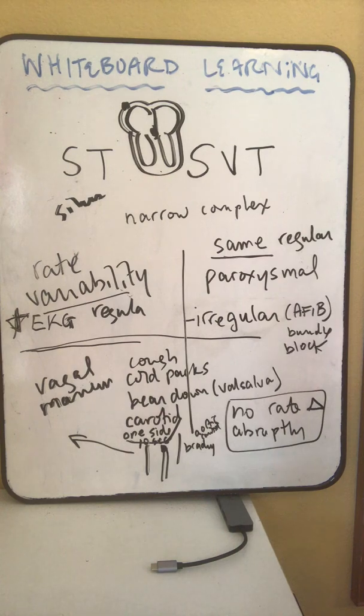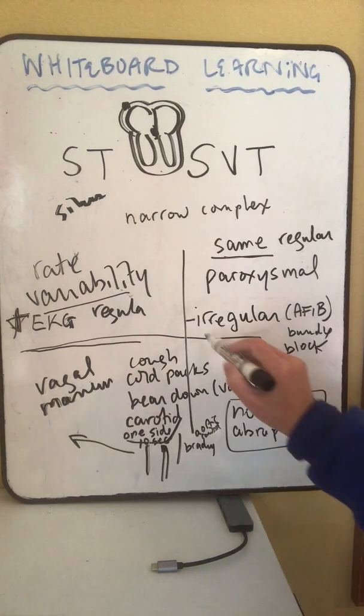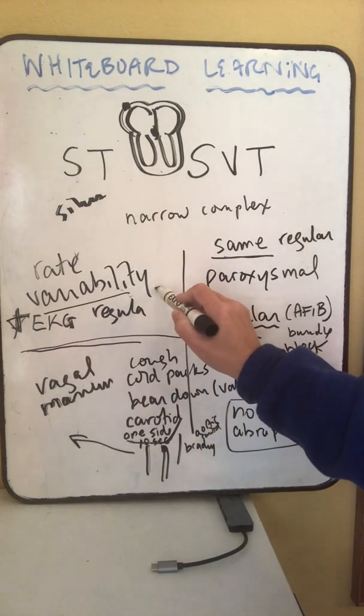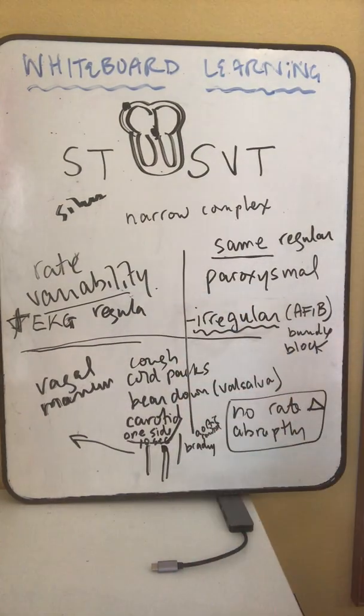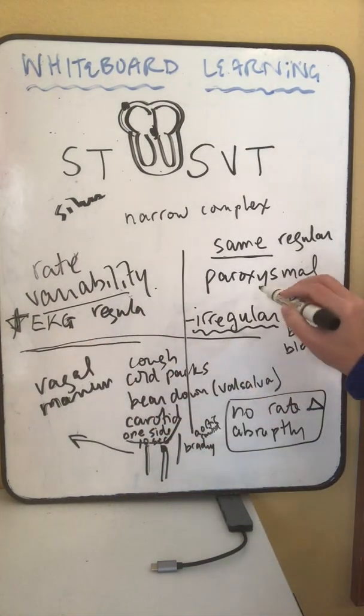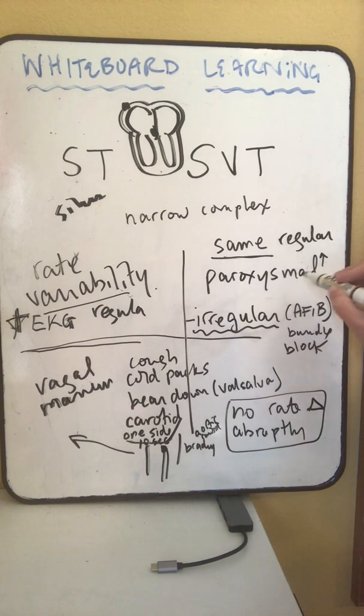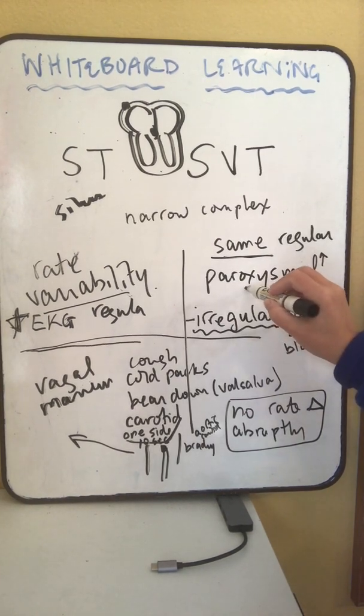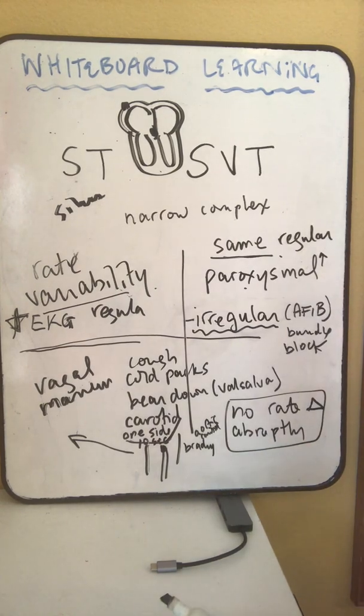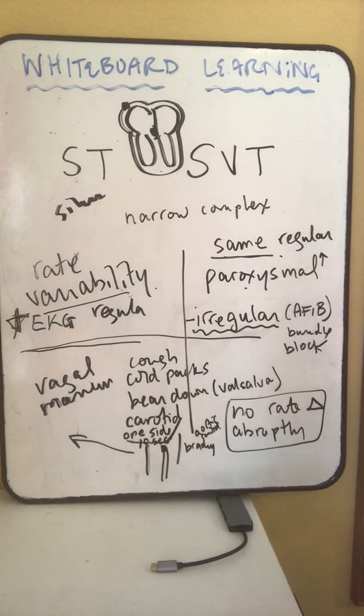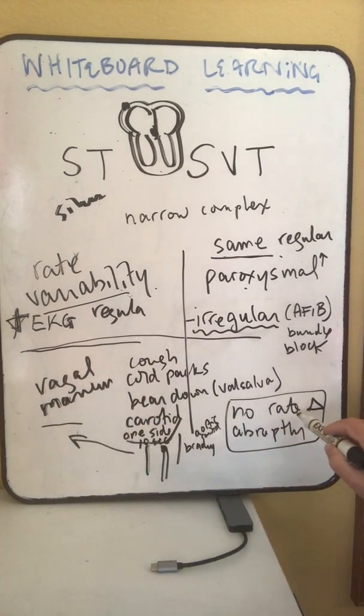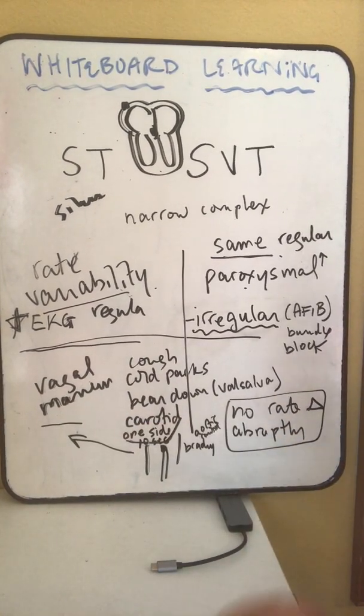I hope that helps. Main hints: get a good EKG. Make sure you're not being fooled by something that's irregular. Look for rate variability at all during your long strip. And look for an underlying disease. If you have any paroxysmal changes to the rhythm, if it goes in and out, then it is definitely an SVT. It will never change rate and try a maneuver to see if that will either gradually change the rate or abruptly or not change the rate.